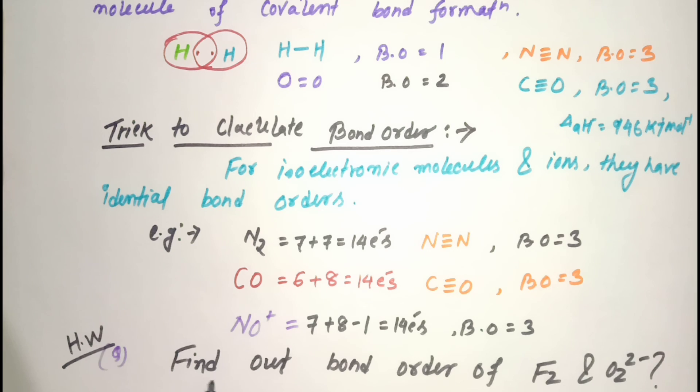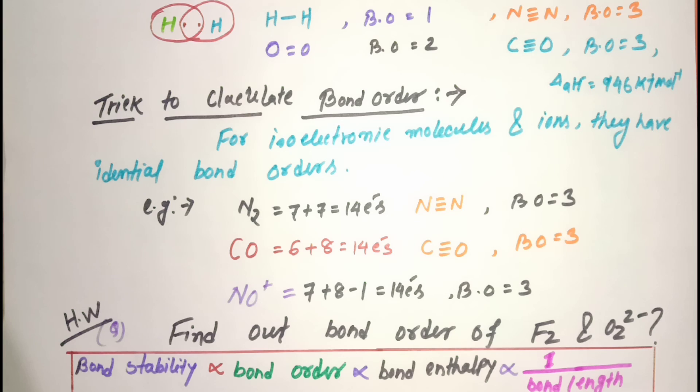Here is homework for you: find out bond order of F2 and O2^2-. Finally, what is the relationship between bond parameters? Bond stability is directly proportional to bond order, directly proportional to bond enthalpy, and inversely proportional to bond length. This correlation is useful for understanding the stabilities of molecules. As bond order or bond enthalpy increases, stability increases. But as bond length increases, bond enthalpy decreases, bond order decreases, and stability also decreases.